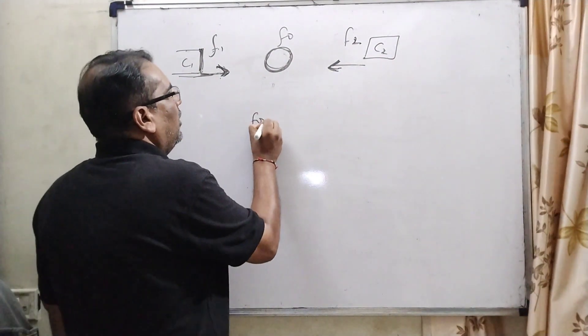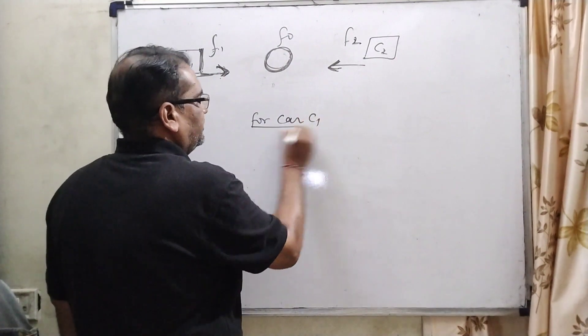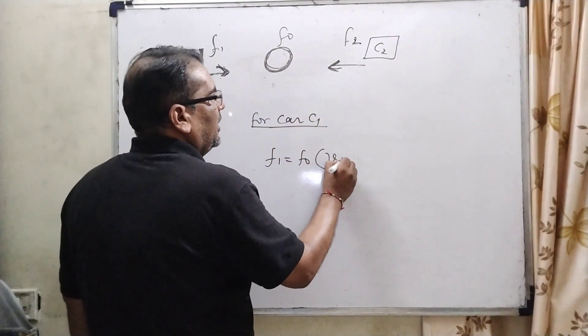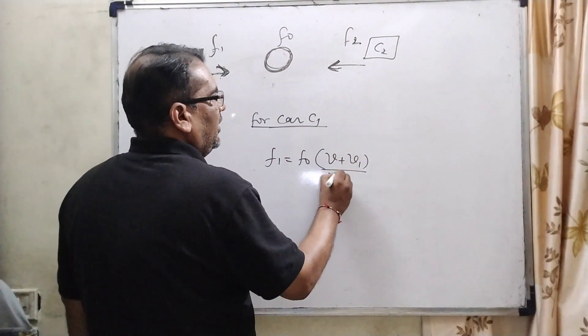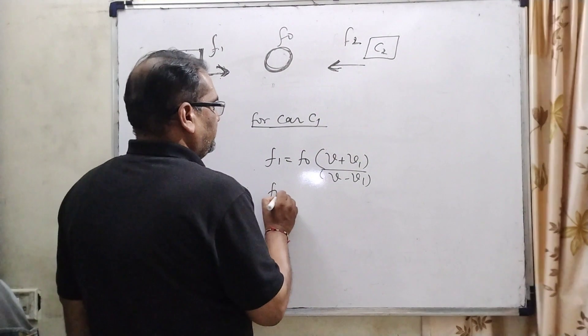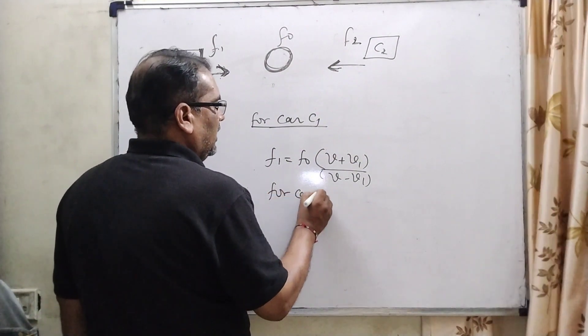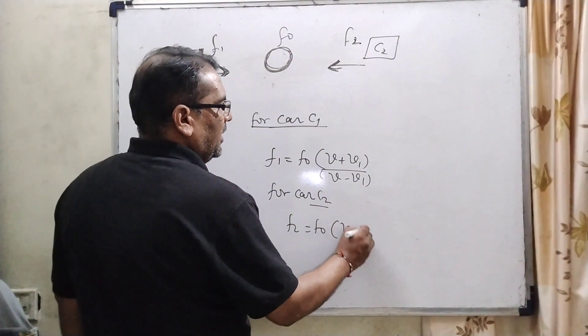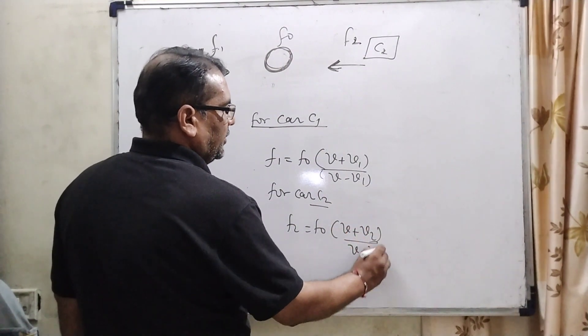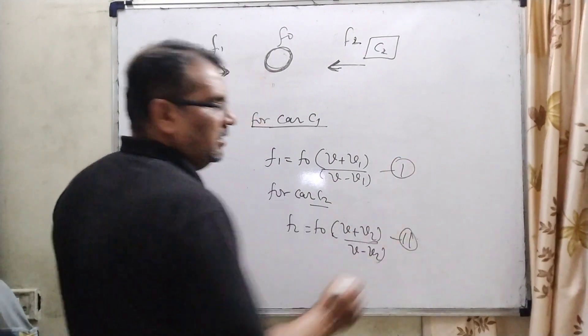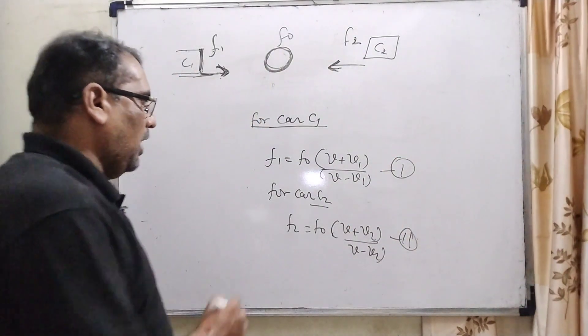Then we can use the formula for car C1: F1 equal to F0 times (V plus V1) divided by (V minus V1). And for car C2, then F2 equal to F0 times (V plus V2) upon (V minus V2). Let us consider this is the first equation and this is the second equation.